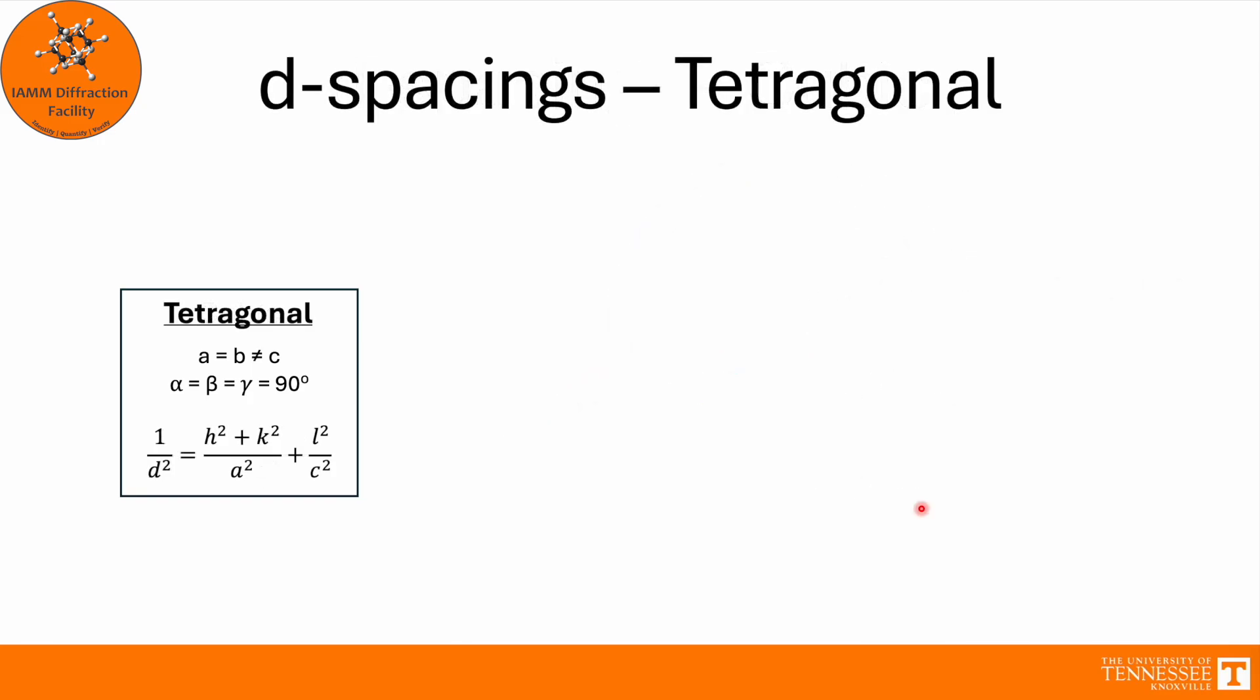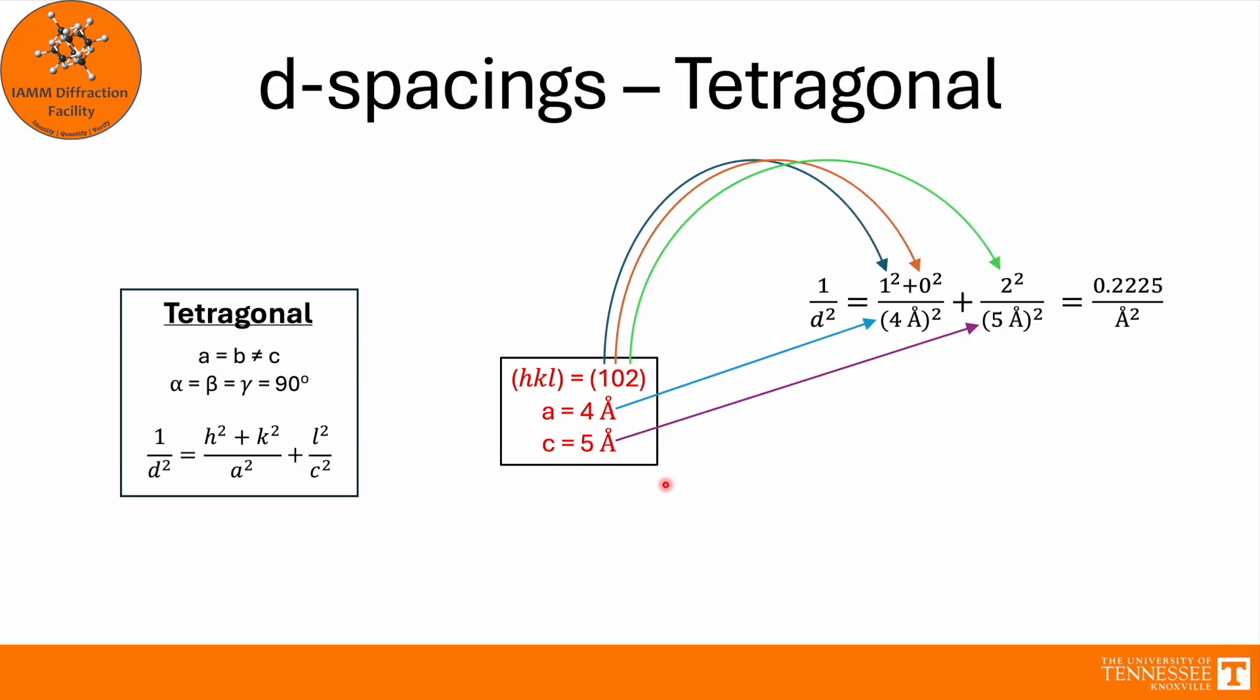Now as we lose symmetry, the equations start to get a little bit more complicated. For a tetragonal, a equals b, which does not equal c. So now we have to have a little bit more of an equation here on the right hand side. We split apart the h and k. That goes with the a. l goes with the c. Here we will pretend that we are looking for the (1,0,2) d-spacing. We'll say that a is 4 angstroms, c is 5 angstroms. We'll take our equation, plug in all of our values, go through the basic math, and solve that we have a d-spacing for the (1,0,2) plane of 2.12 angstroms.